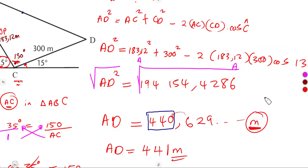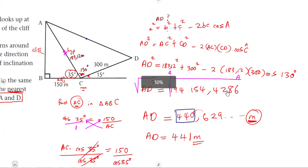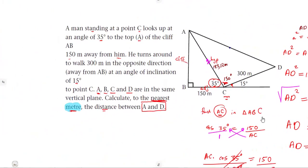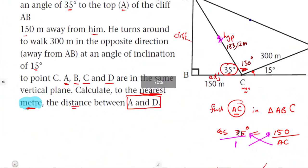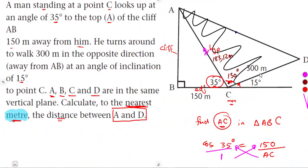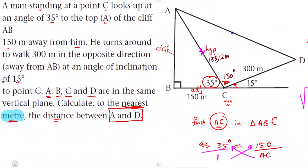These are the typical questions you'll be given on the application of 2D trigonometry — using trigonometrical ratios from Grade 10 where there is a right-angled triangle, and then applying the cosine rule or sine rule for non-right-angled triangles. Revise as many questions as you can.